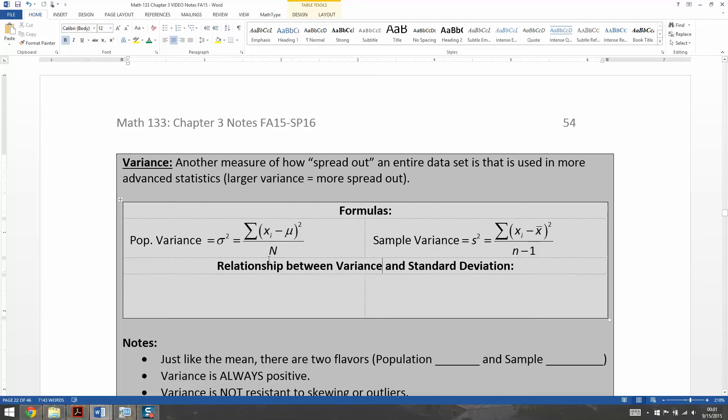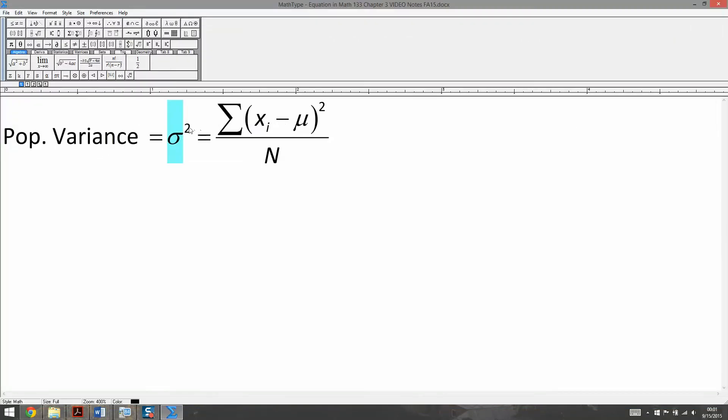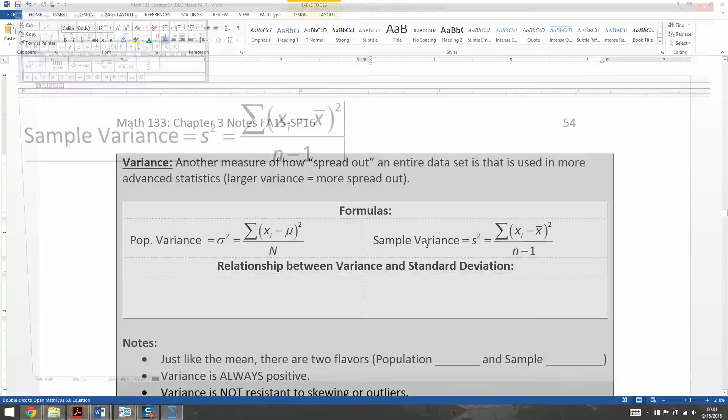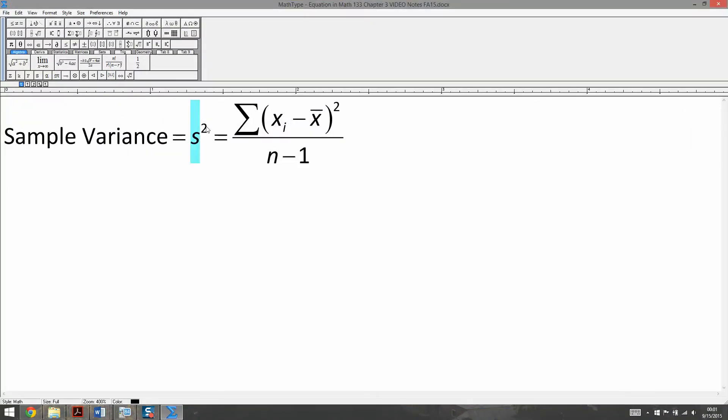So what relationship is there between variance and standard deviation? Well, the variance is the standard deviation squared. So the population variance is the population standard deviation, sigma, squared. And then the sample variance is the sample standard deviation squared.